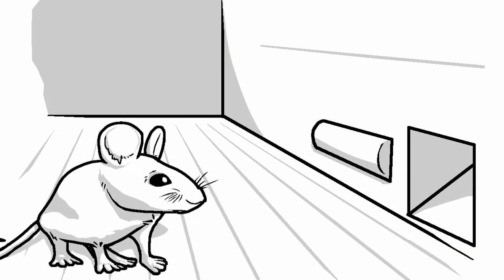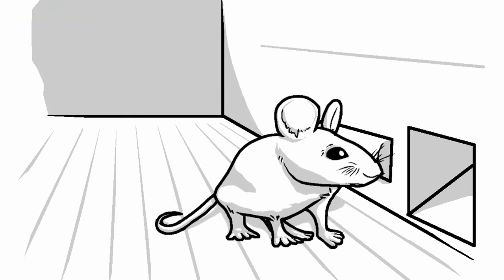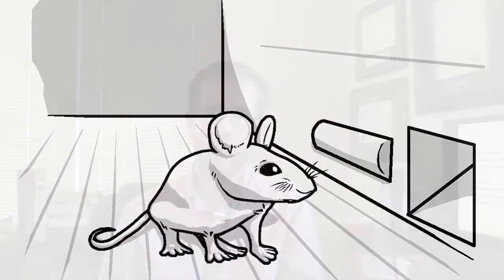Extinction works the same basic way with operant conditioning as it does with classical conditioning. With classical conditioning, after you associate a neutral stimulus with an unconditioned stimulus, that neutral stimulus becomes conditioned and produces a conditioned response. But if you take away the unconditioned stimulus, that conditioned stimulus will gradually revert back to being neutral. It works the same way with operant conditioning, but now instead of associating a neutral with an unconditioned stimulus, you're associating a behavior with a consequence. If you take away that consequence, that behavior will go back to what it was before. If you reward a child for performing some behavior, they'll perform it more often, but if you stop reinforcing that behavior, eventually that learned behavior will fade away — it will become extinct.